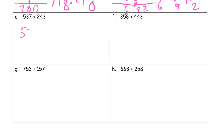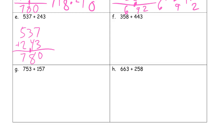Five hundred thirty-seven plus two hundred forty-three. Seven plus three is ten — one ten composed. Three plus four is seven, and one more is eight. And five plus two in the hundreds — seven hundred eighty.